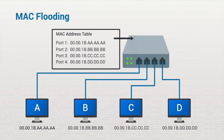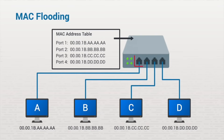For example, let's say that workstation A wants to send information to workstation D. The frame has a source address ending in A's, and the destination address is the address ending with D's. When A sends the information, the switch examines the destination address and sends the data out port 1 to its destination. Workstations B and C aren't involved, so they never see the information.